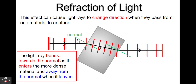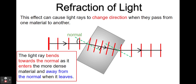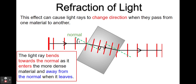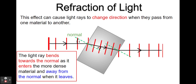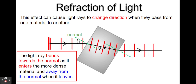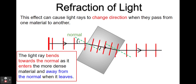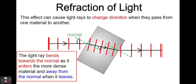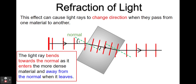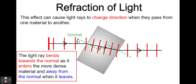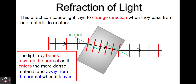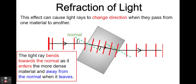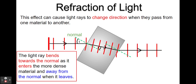Generally, as light enters the block the light will bend towards the normal — so in this case it bends downwards towards that normal line — and then as it leaves the block it bends away from the normal, back upwards away from that green line.